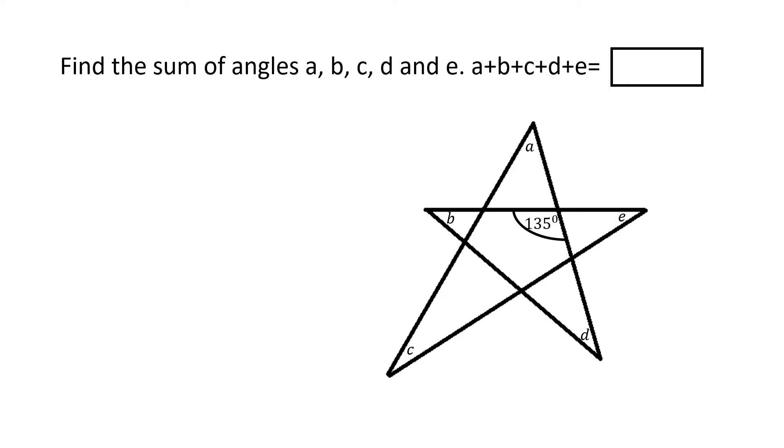In this problem, we are given a figure and some of the angles are marked up within the figure. You can see the angles that are marked as A, B, C, D and E, and then there is one other angle which is marked and a specific value for that angle is indicated and this value is 135 degrees.